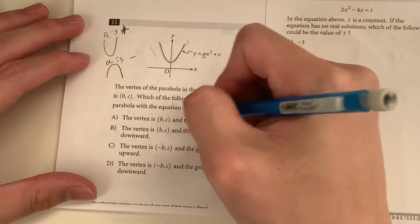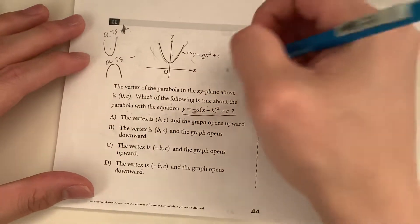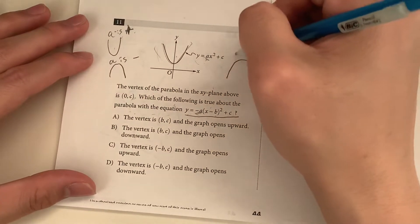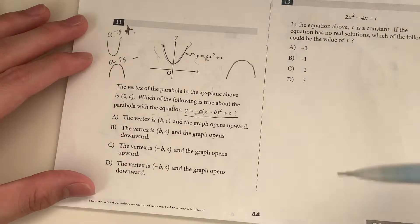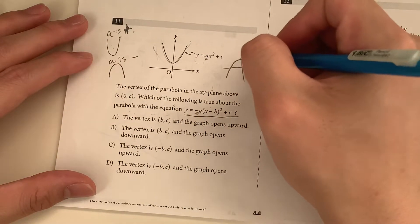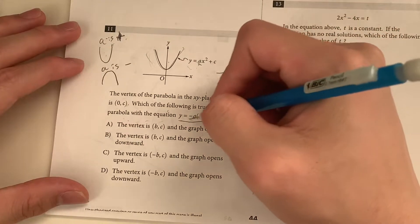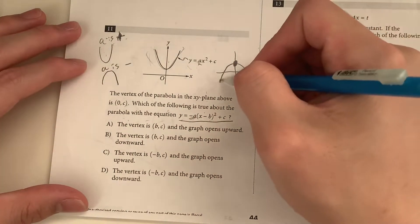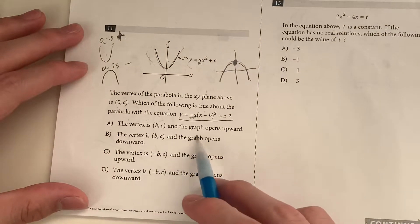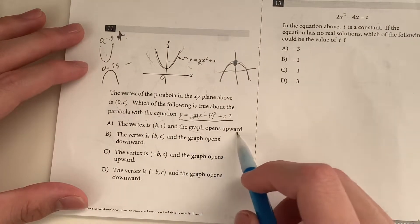So it means the other graph, this graph right here, which is different from this one, has to be a negative or a sad face. Right? So what does a sad face mean? It means that this is going to be your tallest point, a.k.a. your vertex, and A is negative. So it opens downwards.